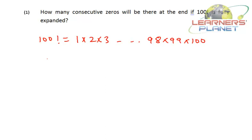If one 5 and one 2 is multiplied we get 10. If two 5s and two 2s are multiplied we get two zeros. If three 5s and three 2s are multiplied we get three zeros. So as many 2 and 5 combinations there are, we get that many zeros. Precisely, we have to calculate how many 5 and 2 combinations are there. So let's see how many 5s are there in 100 factorial — we calculate it by dividing 100 by 5, giving us 20.